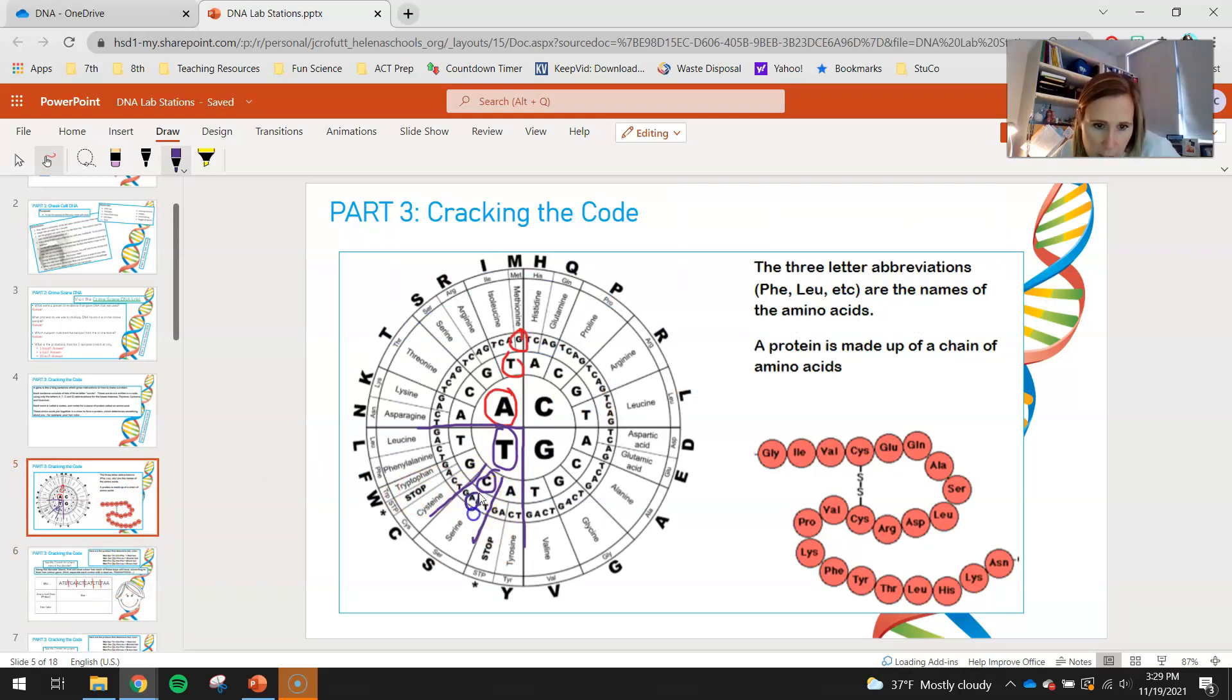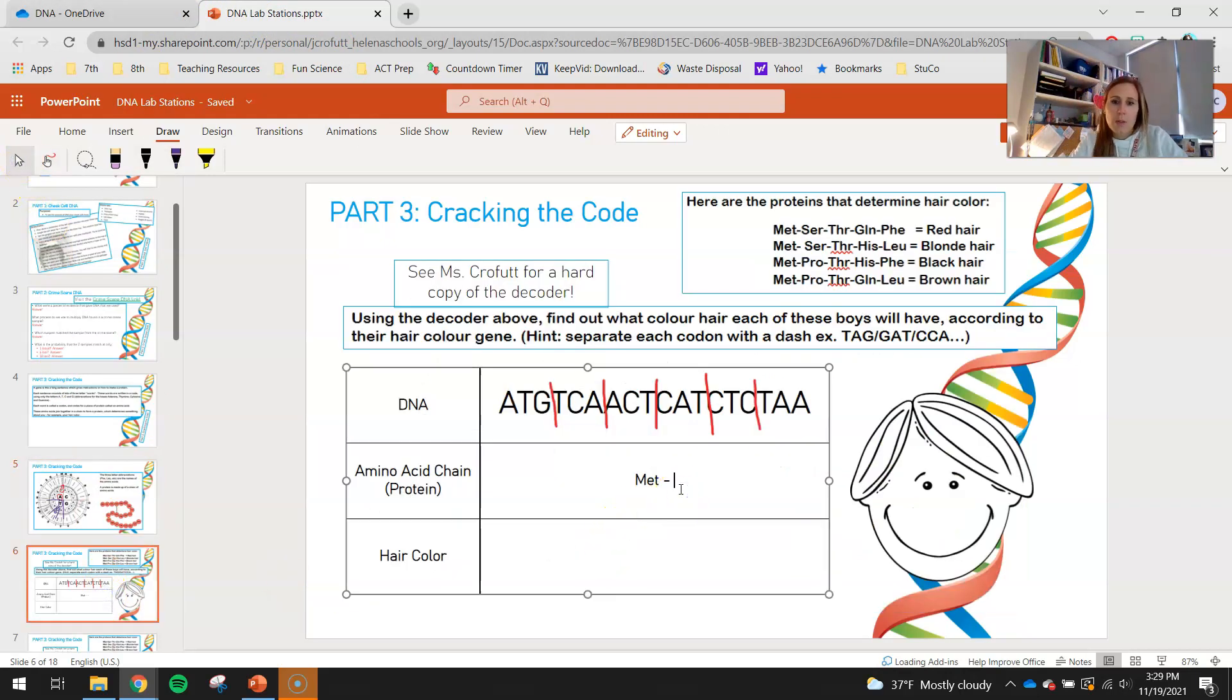So serine would be your guys' next amino acid in that chain. So you guys would go here. You would type in serine. And then you guys would do A, C, T.